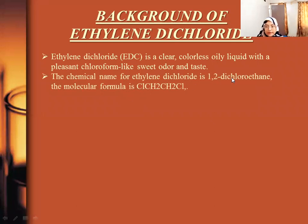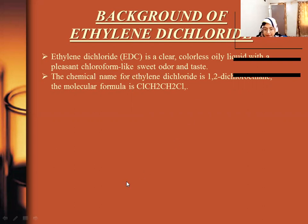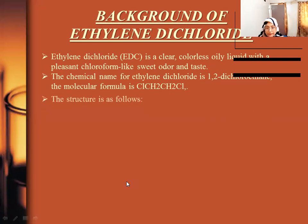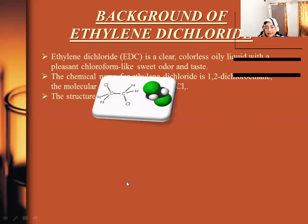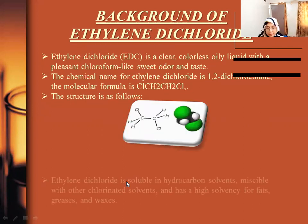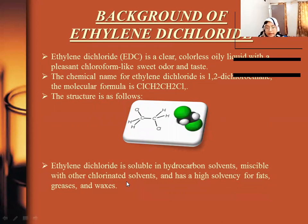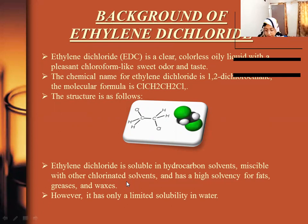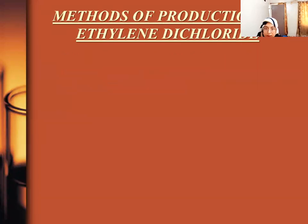Ethylene dichloride is a clear, colorless, oily liquid with a pleasing chloroform-like sweet odor and taste. The chemical name for ethylene dichloride is 1,2-dichloroethane and the molecular formula is being shown on your screen. Ethylene dichloride is soluble in hydrocarbon solvents, miscible with other chlorinated solvents, and has the highest solvency for fats, greases, and waxes. However, it has limited solubility in water.